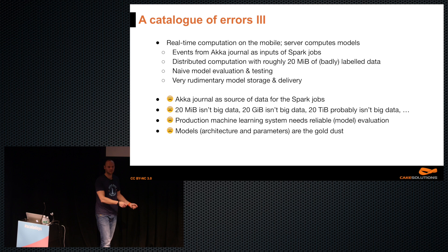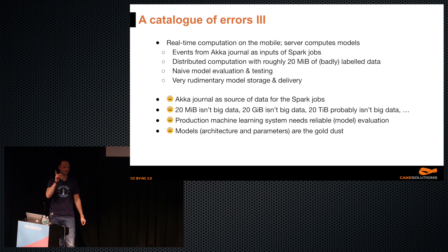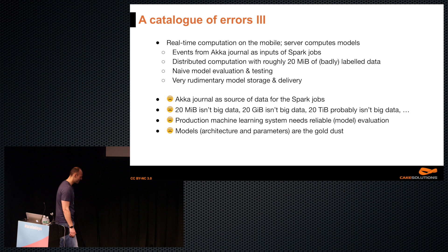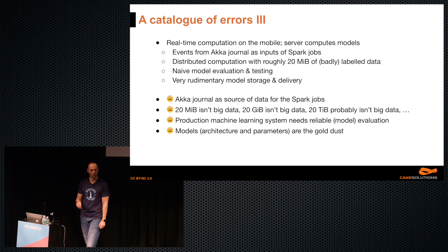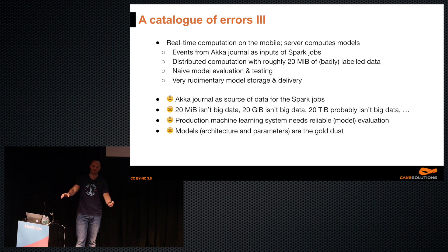There was no way to keep historical rolling best models — whatever we computed on the day got delivered to the mobile application. We treated all users the same, and we had one user with 20 megabytes of data. Model storage was rudimentary — files on one machine. So the terrible ideas: using the Akka journal as the source of data for Spark jobs, because messages end up as blobs in the journal.